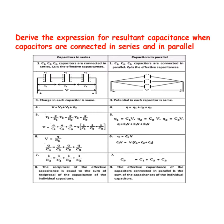Consider 3 capacitors of capacitance C1, C2 and C3 connected in series. Let V be the potential difference applied across the series combination. Each capacitor carries the same amount of charge Q. Let V1, V2, V3 be the potential difference across each capacitor. Thus V is equal to V1 plus V2 plus V3.